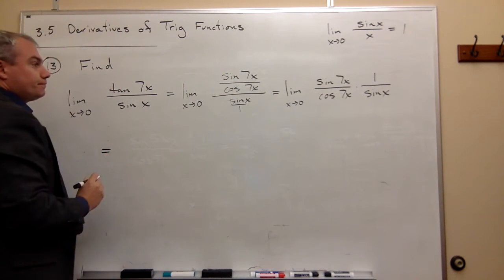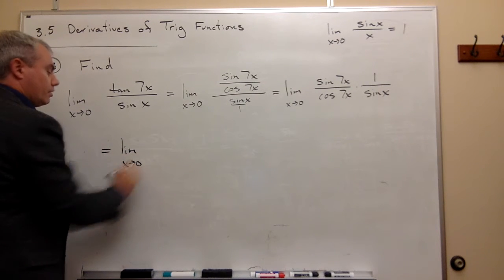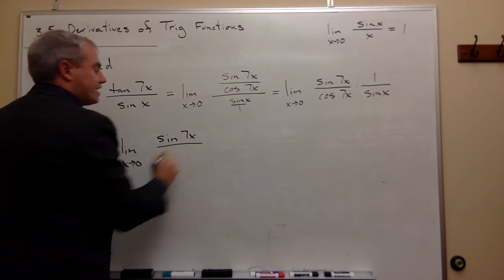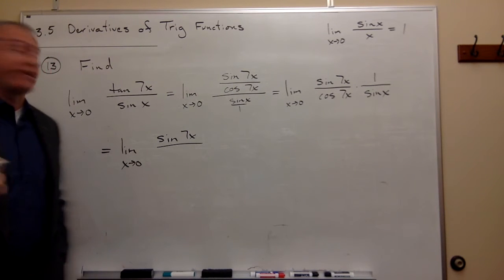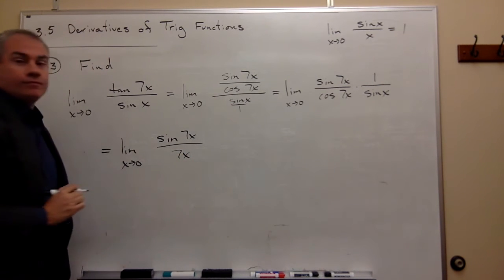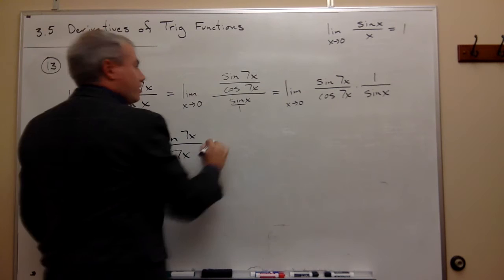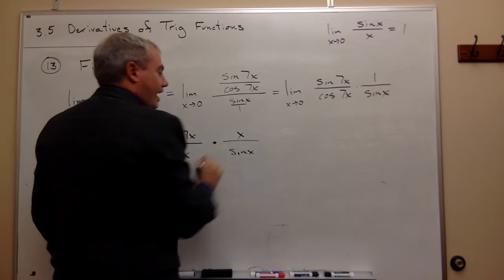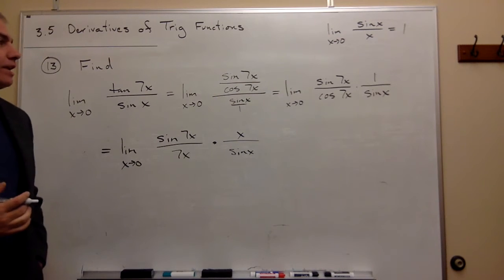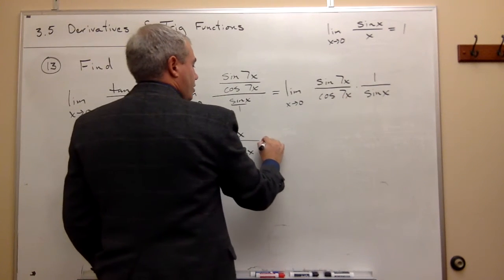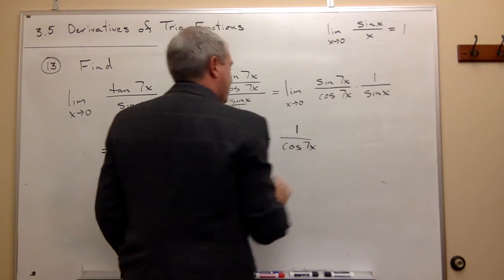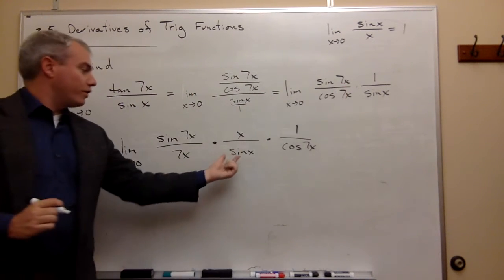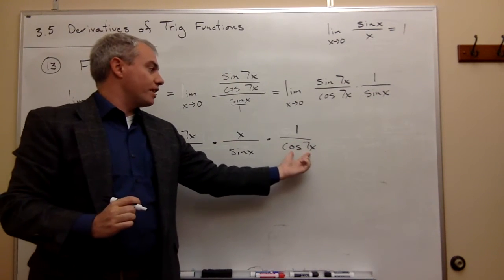So let's write it in. We have the limit as x goes to zero of sine of 7x — on the bottom of sine of 7x it would be ideal to have a 7x, so let's write it in. And we also said it would be great to have an x on top of the sine of x. We also have cosine of 7x on the bottom, so we write 1 over cosine of 7x. We already had sine of 7x, sine of x, and cosine of 7x — but we didn't have 7x on the bottom or x on the top.